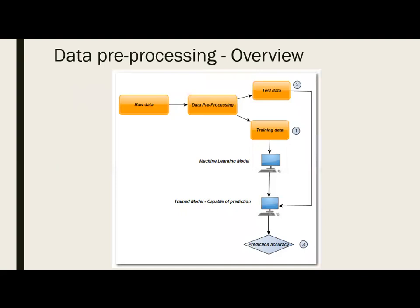For the data preprocessing overview: in real time you may get data from numerous sources, and we cannot assume the data will be in a proper format or have proper values. So we consider it as raw data that needs to be processed — the general terminology is data preprocessing. After processing, we will have refined data which is divided into two categories: test data and training data. The training data is given to the machine learning model to train it, after which the model is ready to predict values for given inputs. You then provide the test data and compare the accuracy of the model.